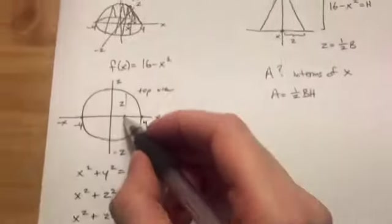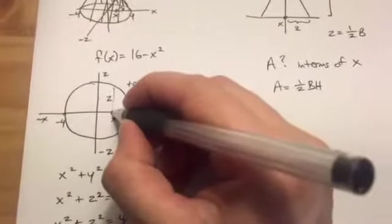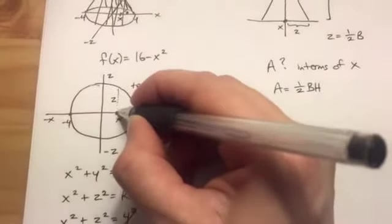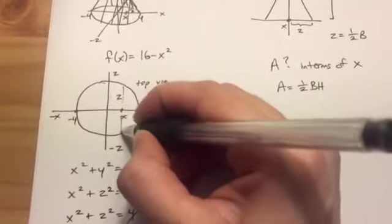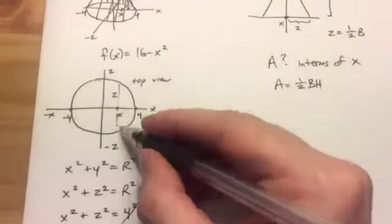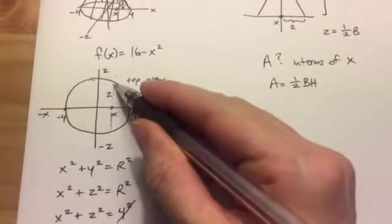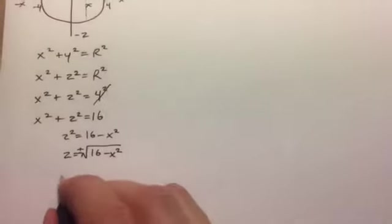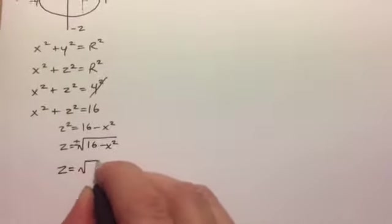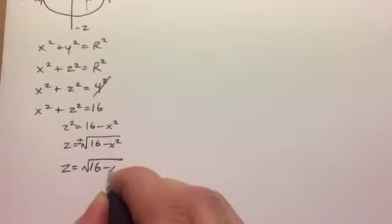But if you look at the graph here, you're plotting it, and you have an x value here. For this x value, you'll get two different z values. You get a positive z value and a negative z value. I'm only concerned with the positive one, so going back down here, I'm just going to ignore that and deal with only the positive value of this square root.